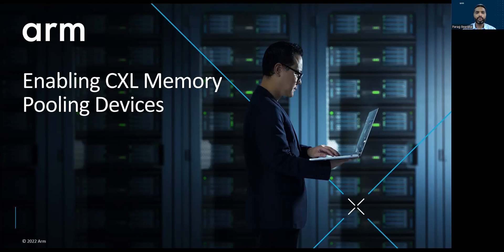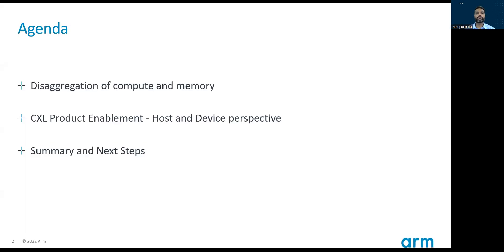From an agenda point of view, these are the topics we are going to cover. First and foremost, we will discuss about the main reasons for disaggregation of compute and memory. We'll cover perspectives from some of the cloud service providers — I'm going to specifically call them hyperscalers. Then we move to cover CXL from both host and device side perspective and how CXL is enabling new data center architectures, specifically focusing on memory pooling devices. Then we'll summarize and discuss specific next steps.